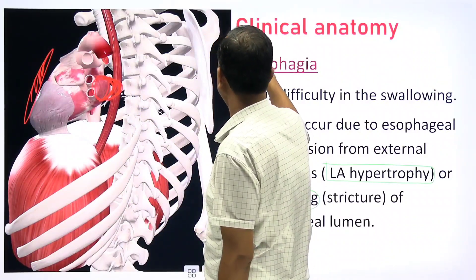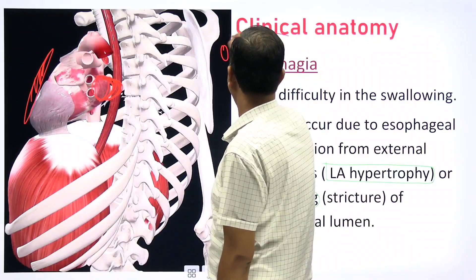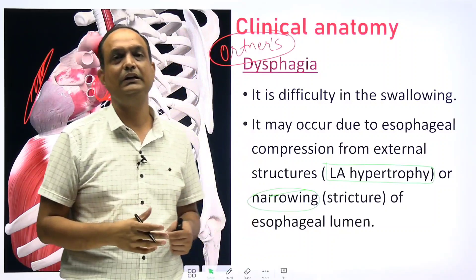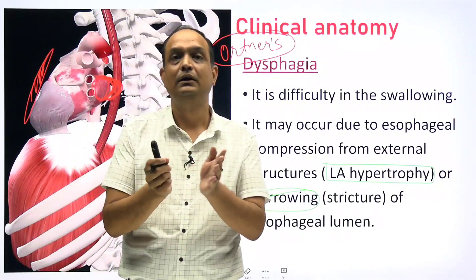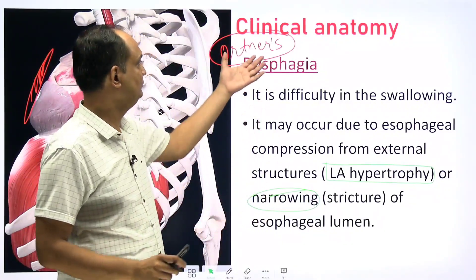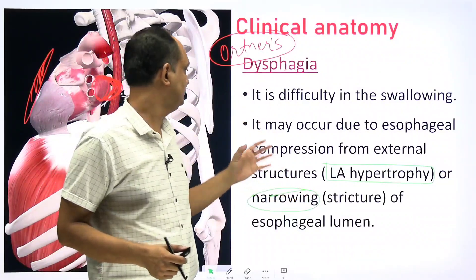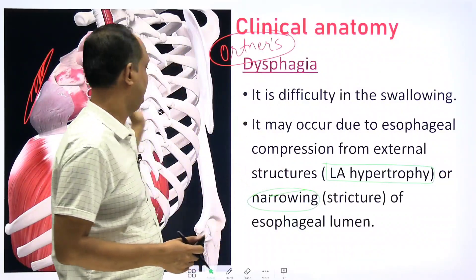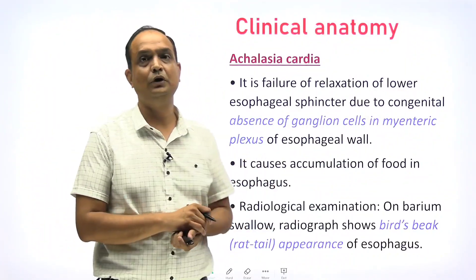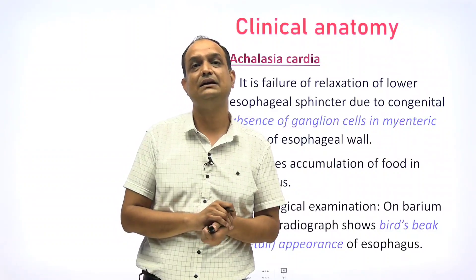This dysphagia due to left atrial hypertrophy is one part of Ortner's syndrome. Ortner's syndrome has multiple factors and involves different parts of the body, but one important feature is dysphagia caused by left atrial hypertrophy.